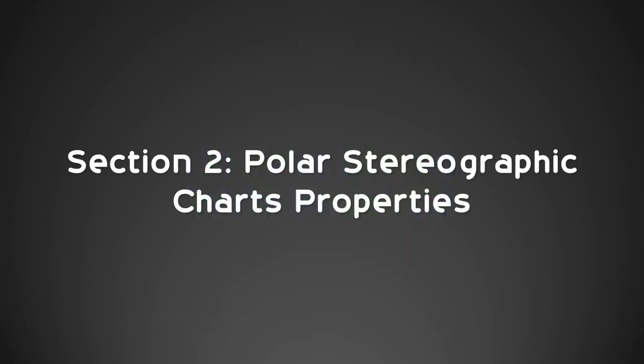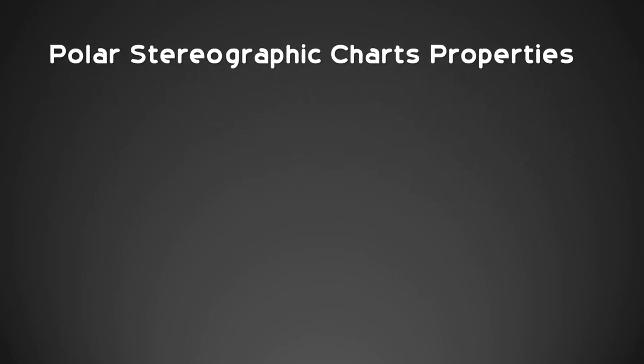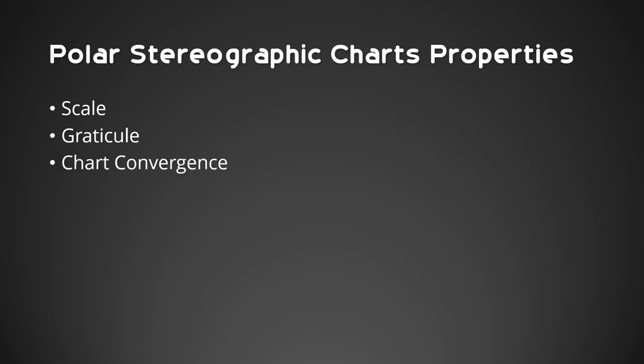Section 2: Polar Stereographic Chart Properties. The list of properties that we will investigate are as follows: scale, graticule, chart convergence, rhumb line, and grid circle.